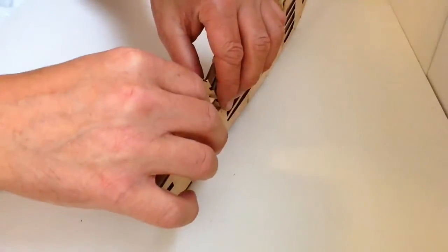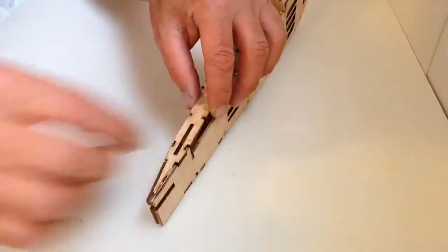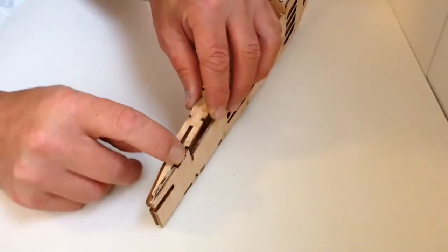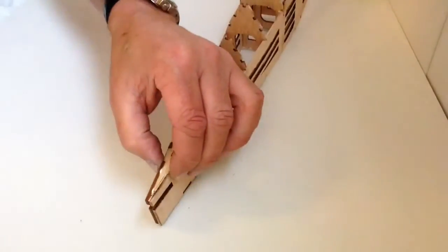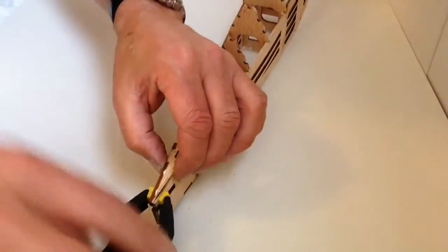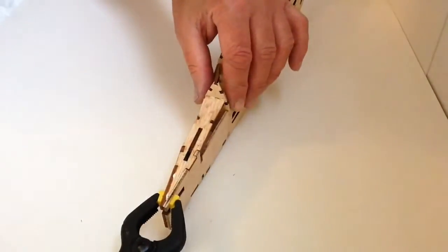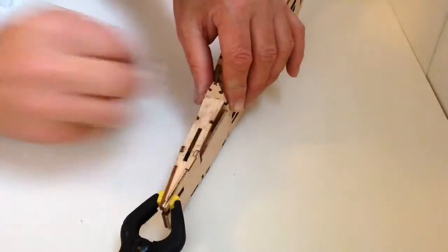Take your section. And then once again, take your clamp, clean up any of your excess glue, and allow that to dry.